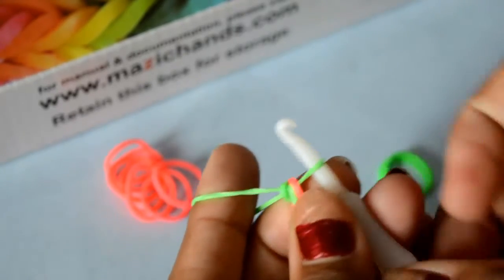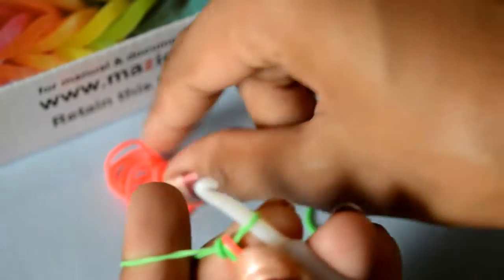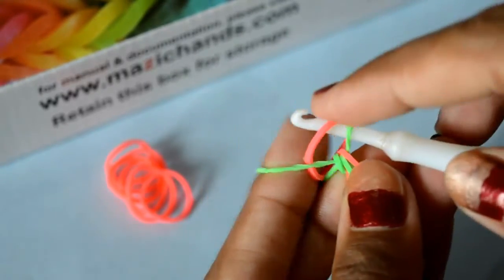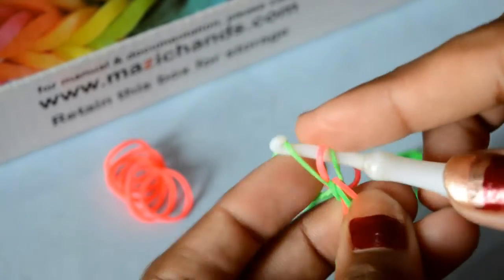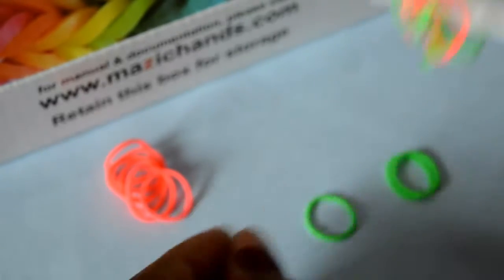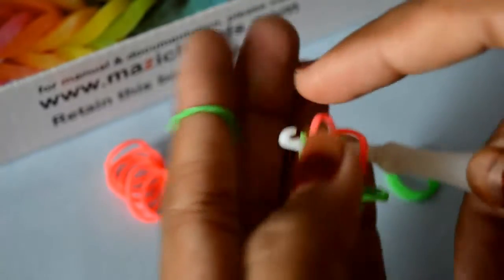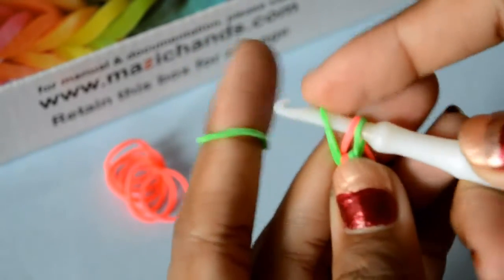Now here, again, put this pink color of a band and now to this green one. Take another green rubber band and hook it to this.